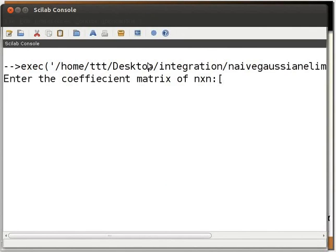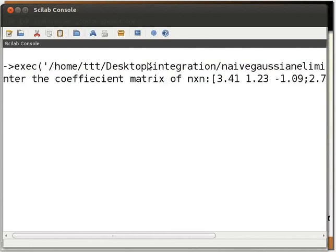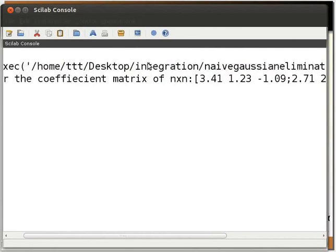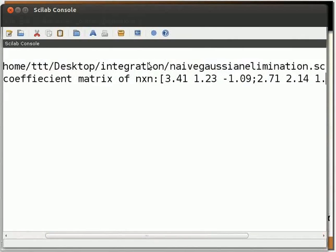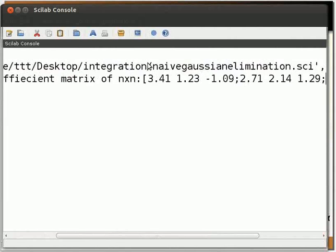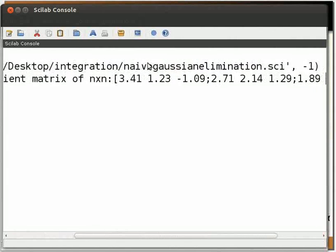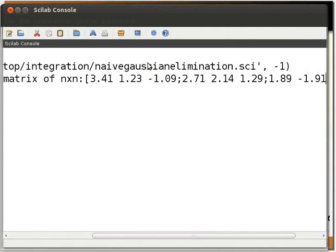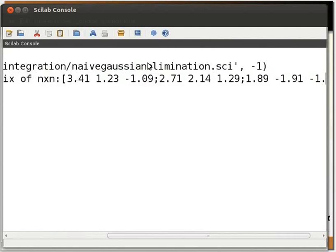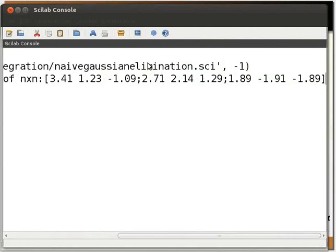Type square bracket 3.41 space 1.23 space minus 1.09 semicolon 2.71 space 2.14 space 1.29 semicolon 1.89 space minus 1.91 space minus 1.89 close square bracket. Press Enter.